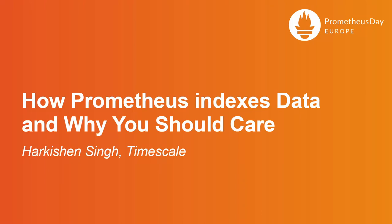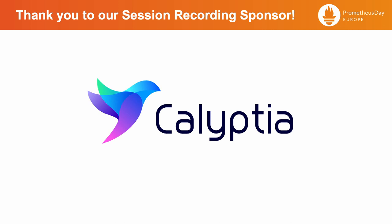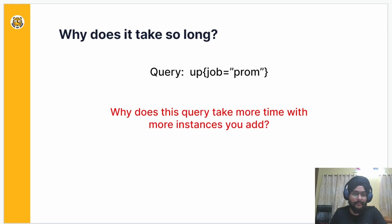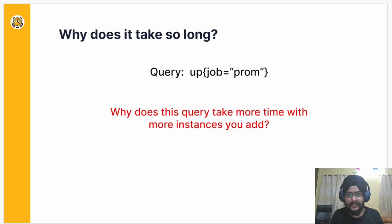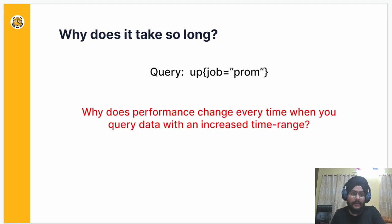How Prometheus indexes its data, and why you should care. Do you ever wonder why a simple PromQL query like this takes more time to execute with more instances you monitor, even when the instance label is not in the query? Or why does the performance slow down every time you query data with an increased time range?